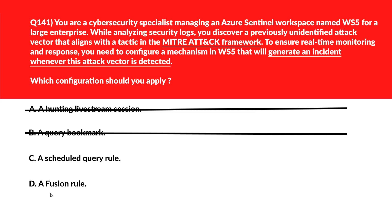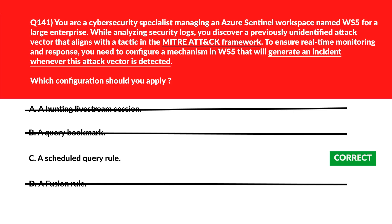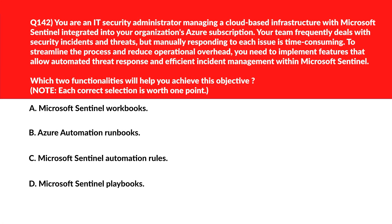One more — D. This is a fusion rule. Fusion rules combine multiple alerts to generate incidents but do not work based on a single hunting query — wrong choice. Let's lock option C, scheduled query rule, as the right choice. We have a brainstorming question now where we need to select two correct answers.